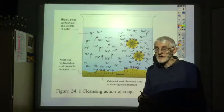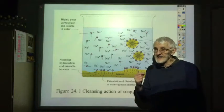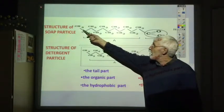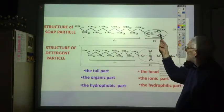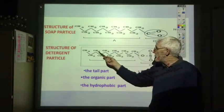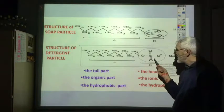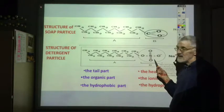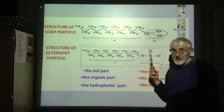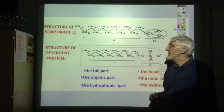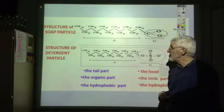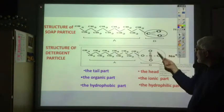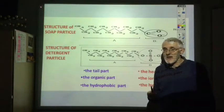So in hard water areas instead of using soap we have to use a detergent. There's only a very subtle difference between a soap and a detergent. At the top we've got a soap molecule: long covalent tail, ionic head. The only real difference is the nature of the ionic head — in soap it's a carboxylate, in a detergent it's a sulphate. The advantage of the sulphate is that its calcium salt is not insoluble, so it works perfectly well in hard water areas. Both have the long covalent tail which is hydrophobic and the ionic head which is hydrophilic — it's just the exact nature of the ionic head that varies slightly.